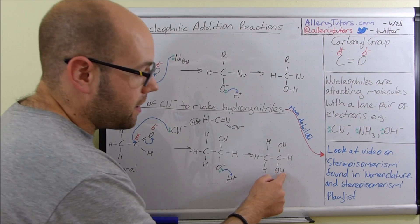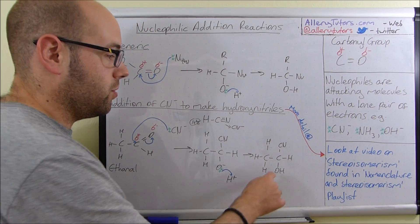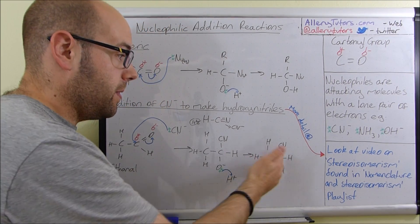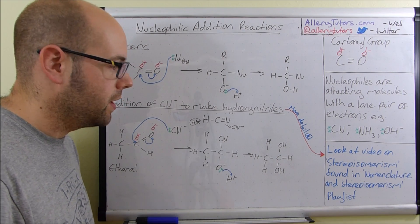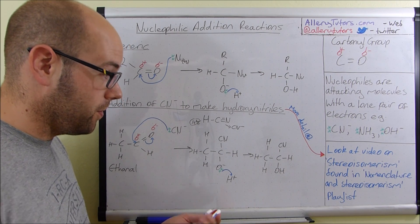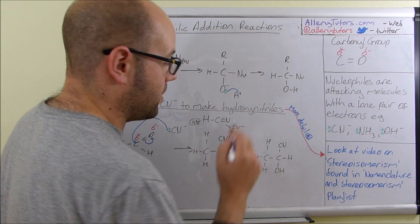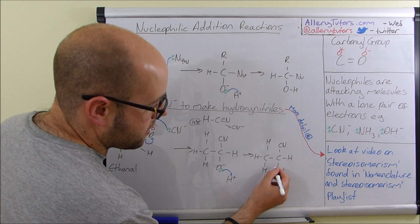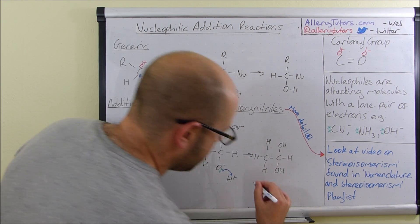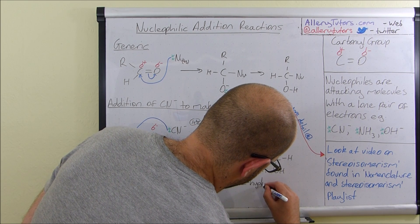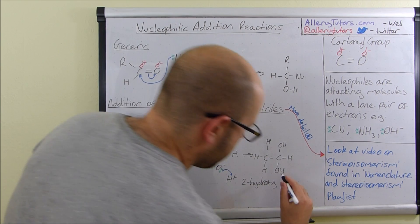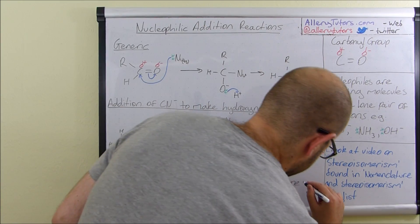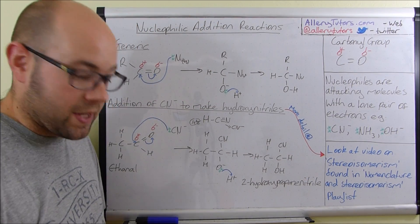It's a propane molecule with a nitrile on the end of it. We also have an OH here — this is not called an alcohol in this context, it's called a hydroxy. So those are the tricky naming bits. The name is pretty straightforward: it's called a hydroxynitrile. We have three carbons, the OH is sitting on the second carbon, so this is called 2-hydroxypropanenitrile.